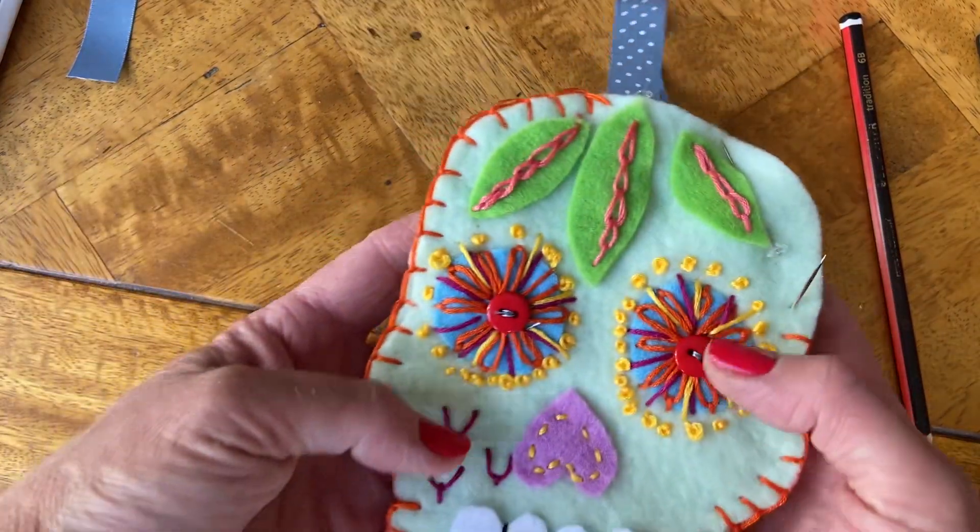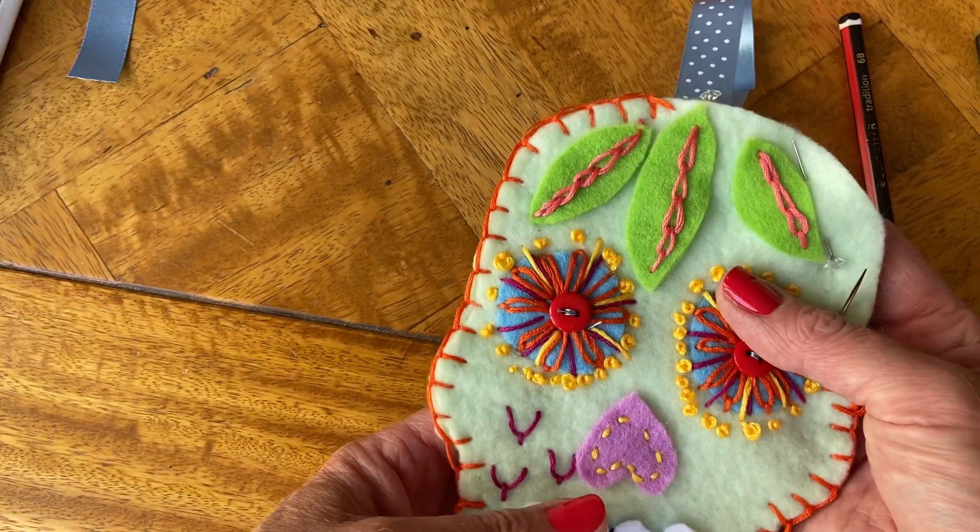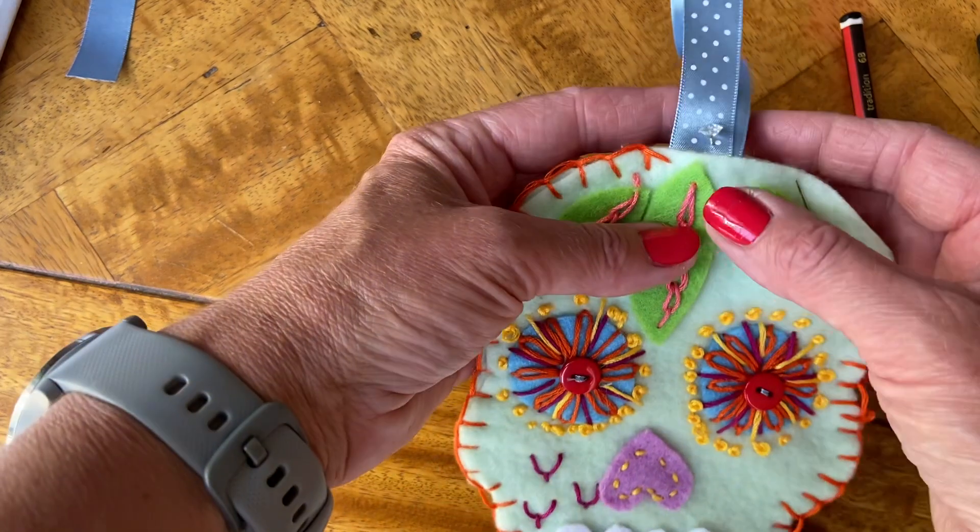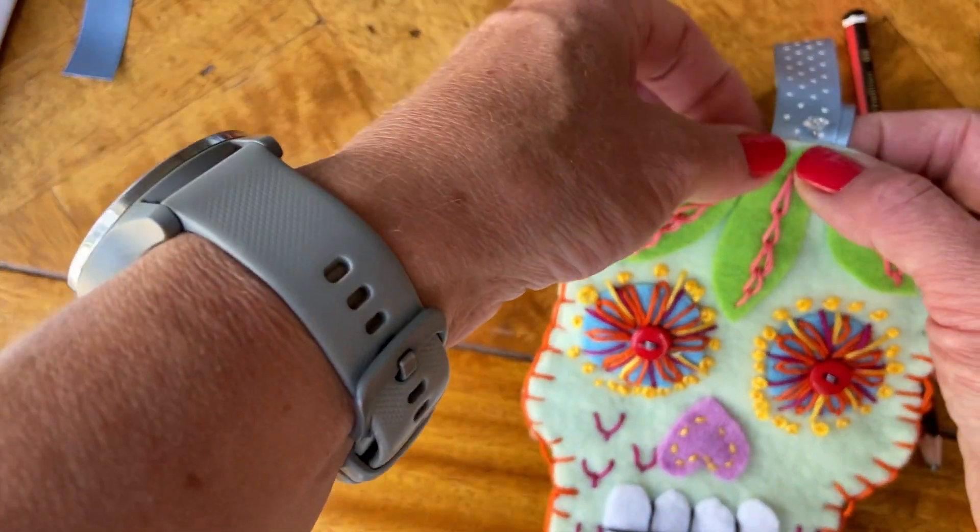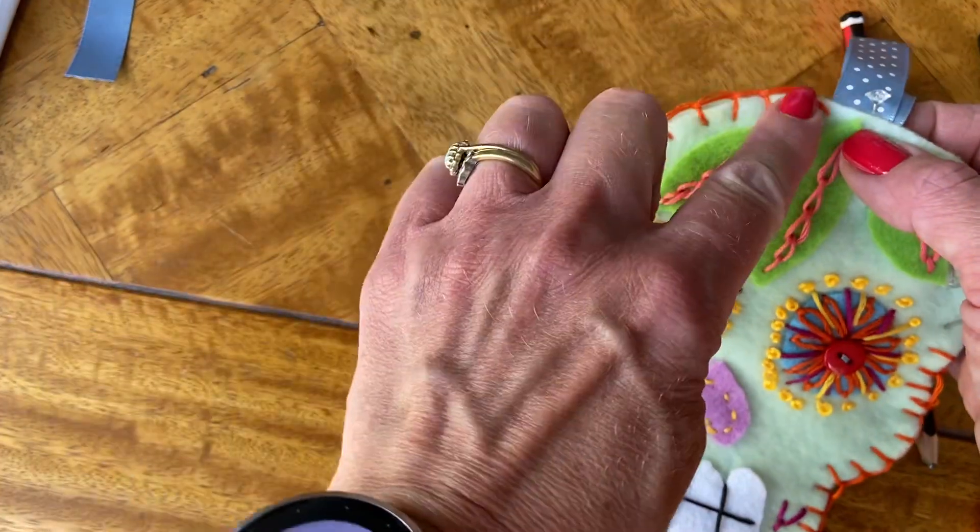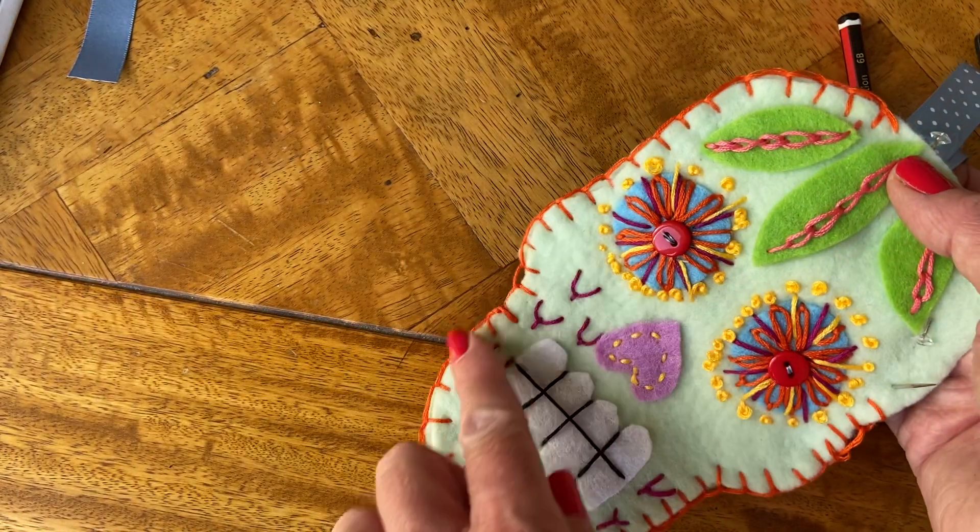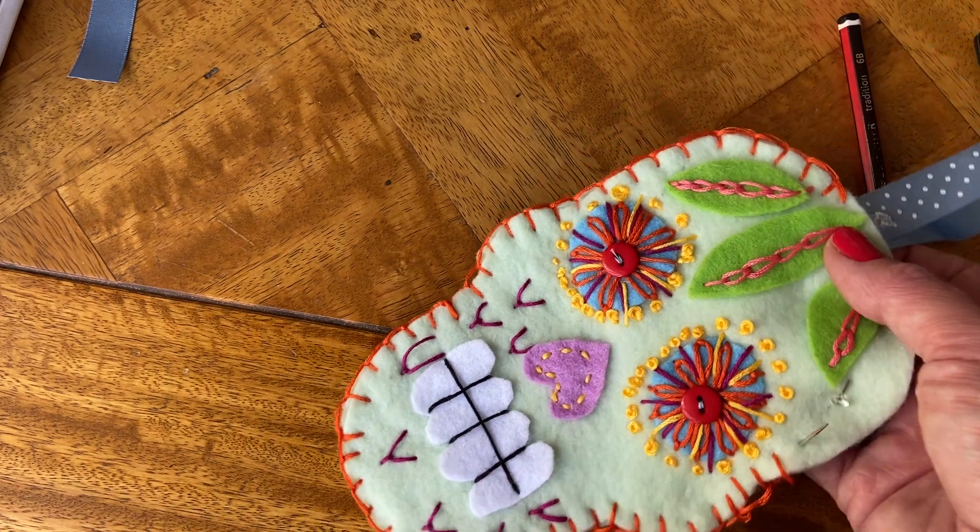The last stage of your sugar skull is to make sure that you start with your blanket stitch here next to the ribbon, and you do your blanket stitch coming all the way around the edges in this direction.